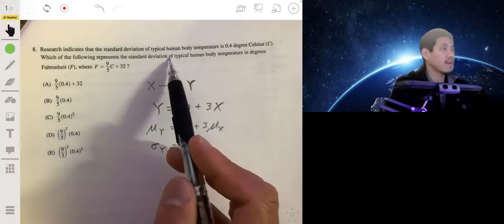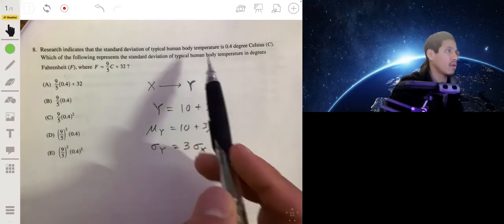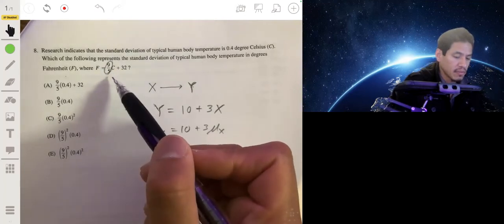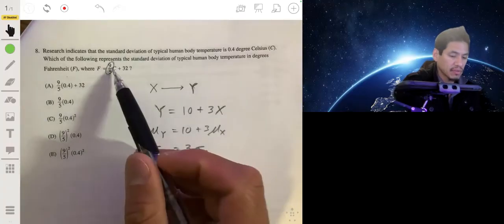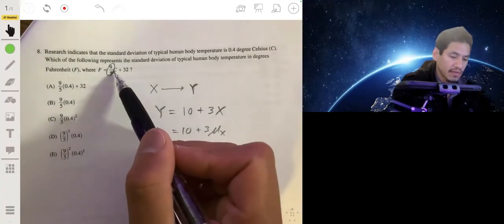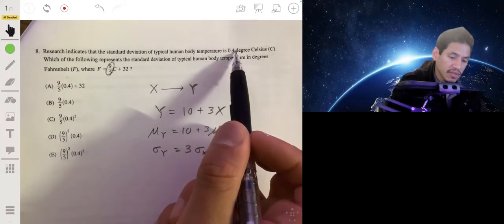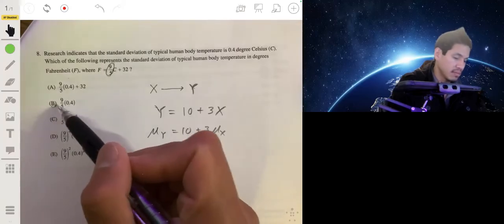But if you want to find the standard deviation of y, you only focus on the multiplication. So it would just be 3 times the standard deviation of x. Since you're trying to find the standard deviation, all we have to do is worry about the multiplication here. We're multiplying and adding, but since it's standard deviation, you only have to do the multiplying. So it'll just be 9/5 times the standard deviation of C. So 9/5 times 0.4. So the answer would be B.